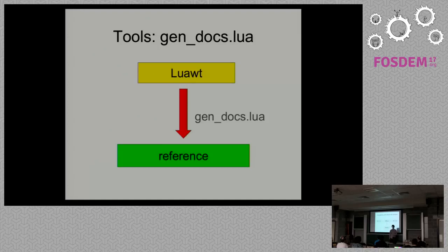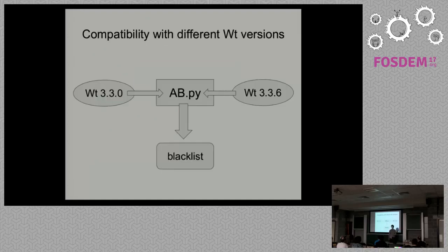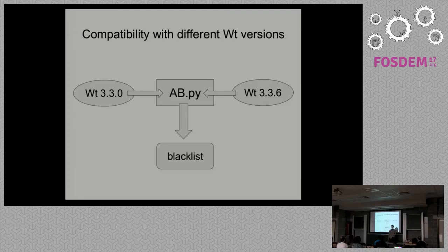For compatibility with different Wt versions, as mentioned, it supports version 3.30 and greater. We generate a list of members for the earliest version (3.30) and the latest (3.36), then generate a blacklist from the diff of those lists, and pass it to our script to avoid binding methods that changed across those six versions.